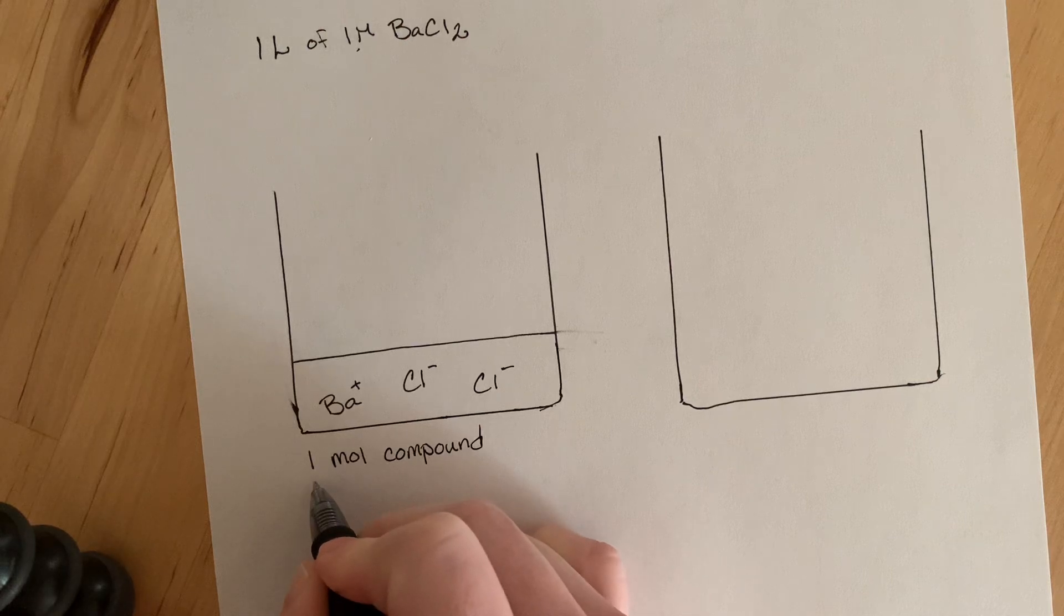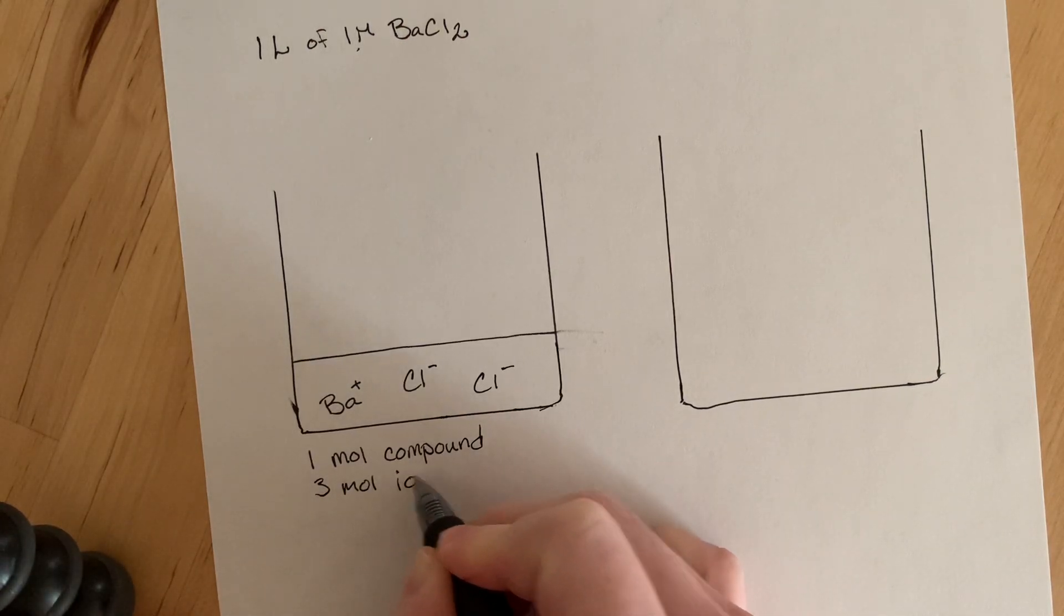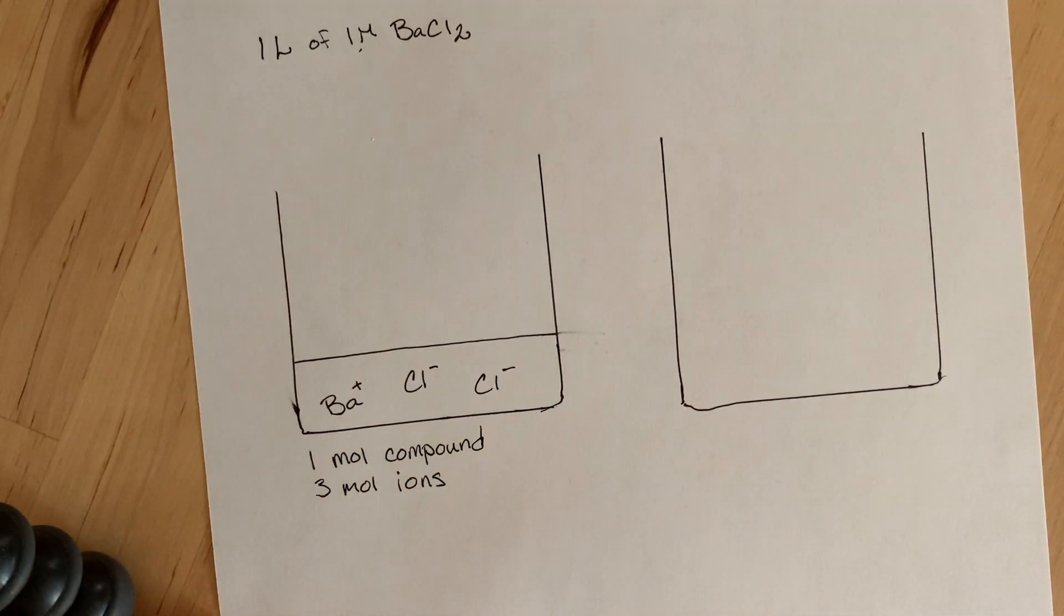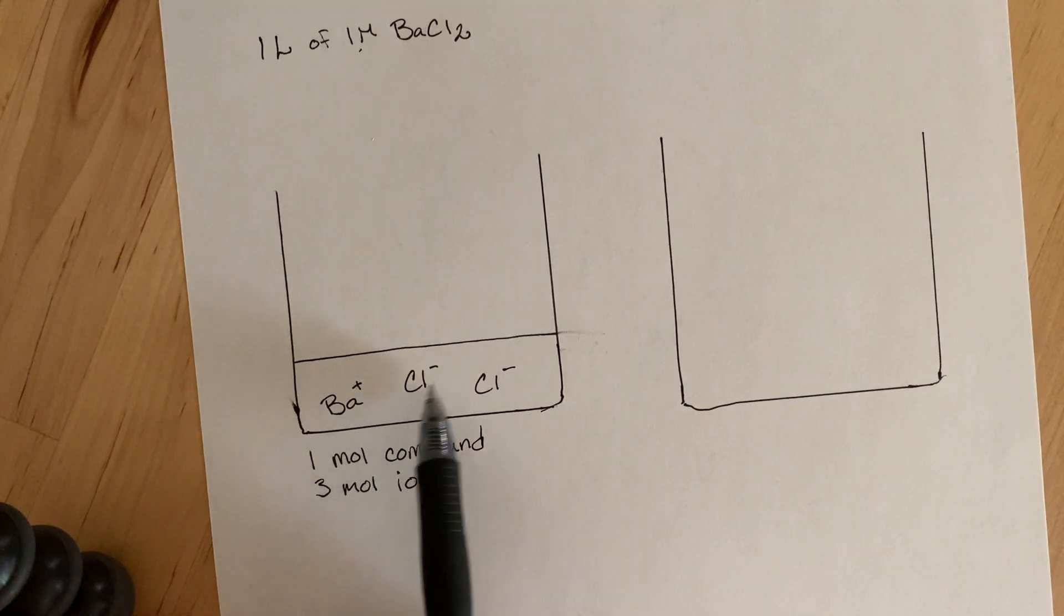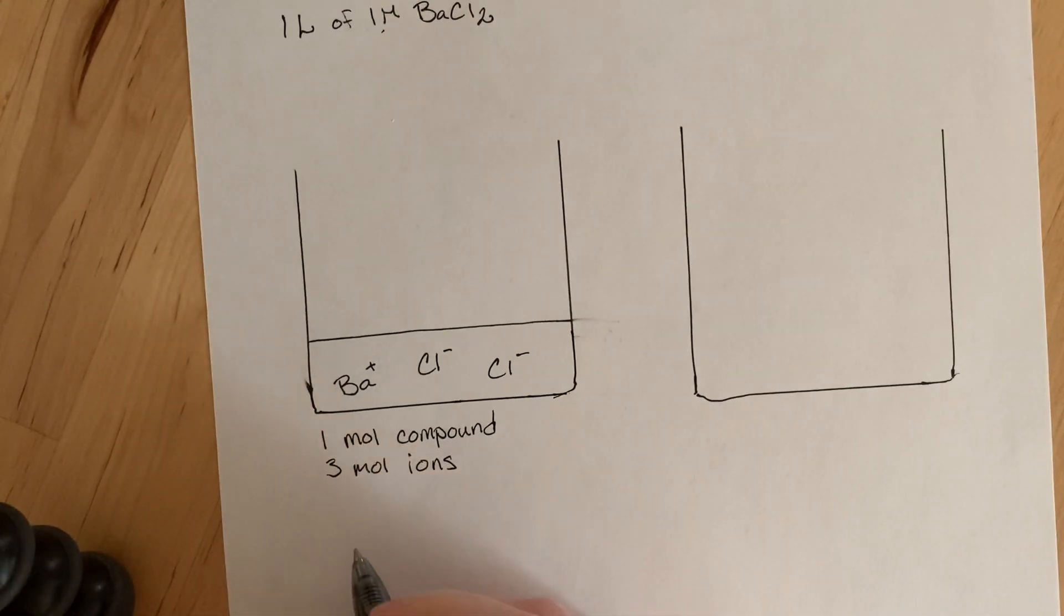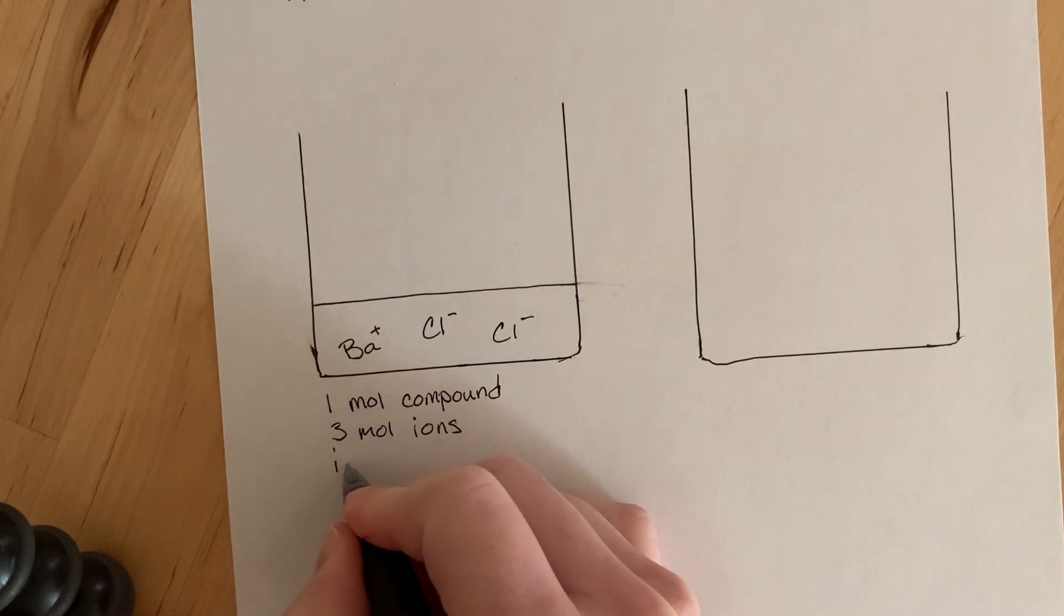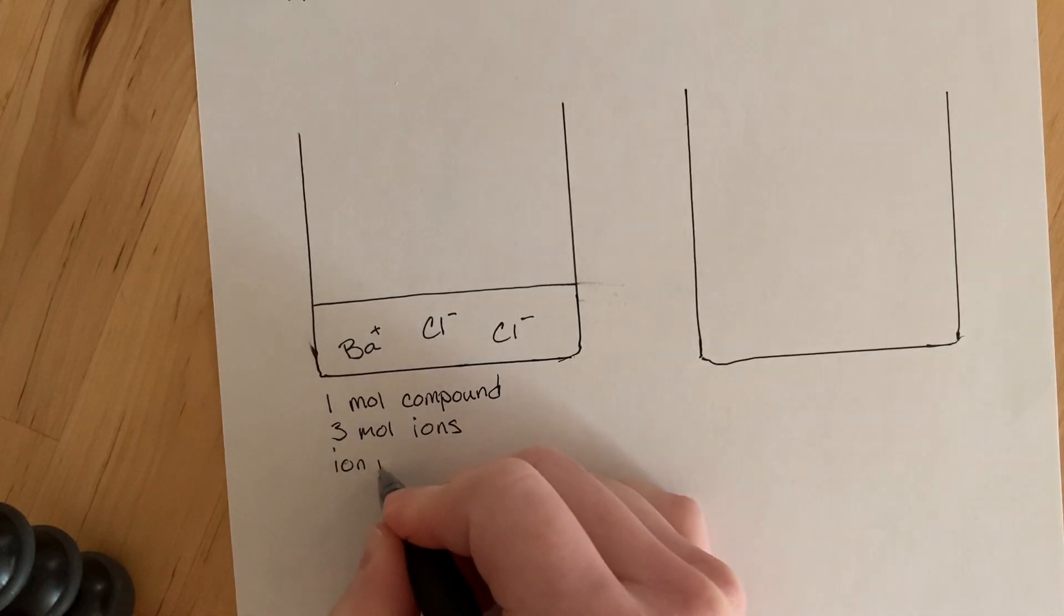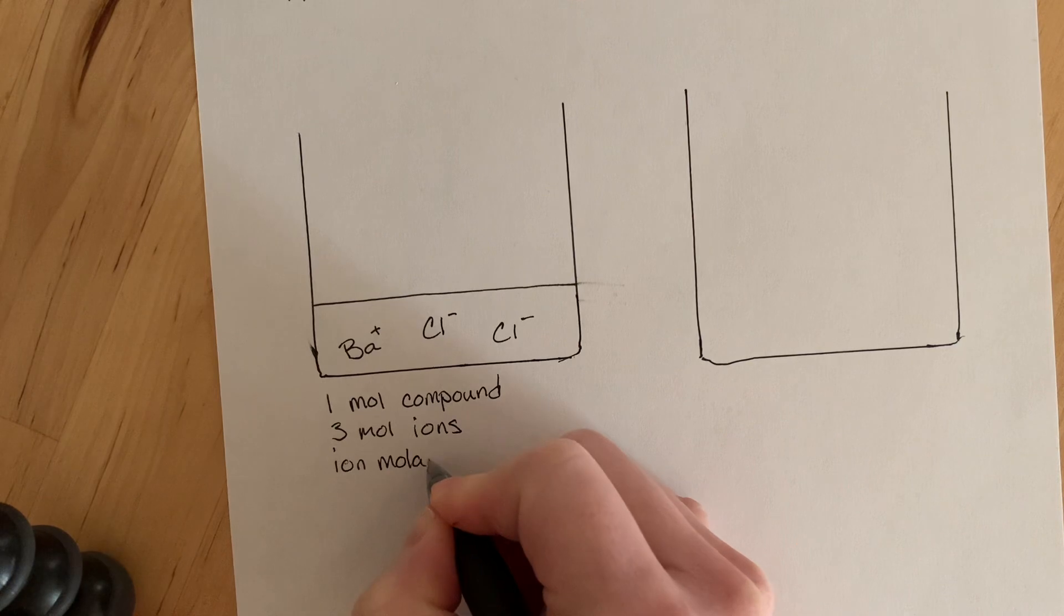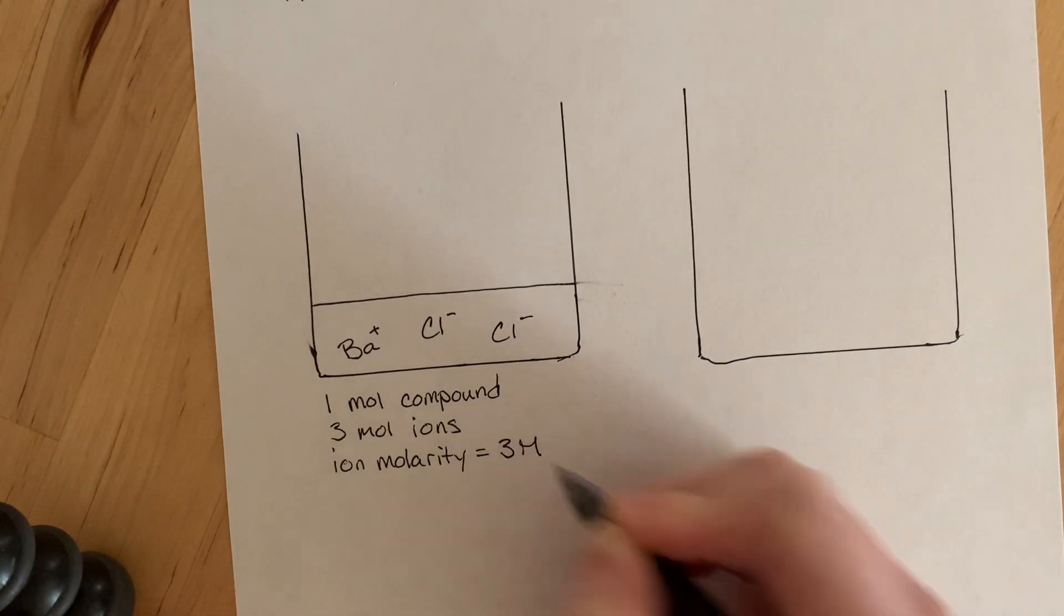But what we have is three moles of ions. If we just don't care what the ions are, we just have three ions total. So we can say that because we have one liter, that the ion molarity equals three molar.